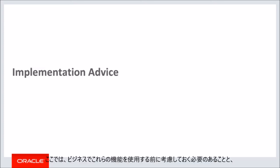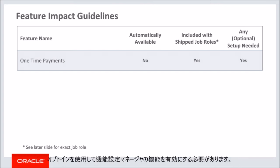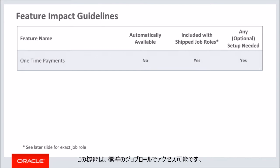In this implementation advice section, we will go through what you need to consider before enabling these features in your business and what you need to know to set them up. The one-time payments feature covered in this training is not available automatically after upgrade. You need to enable the feature in FSM using opt-in. The one-time payments feature has a setup task associated with it, which is covered later in this section. This feature can be accessed through existing shift job roles.